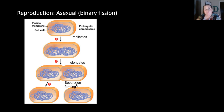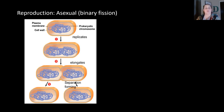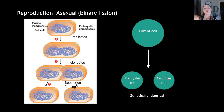Prokaryotic cells reproduce normally asexually. Because they are a single-celled organism, one cell divides into two through what we call binary fission. The reason it doesn't do this through mitosis is because it lacks a nucleus. Mitosis is cell division due to having a nucleus. Binary tells you it's going to be two, and fission means it breaks apart. So one parent cell turns into two cells, and these cells are all genetically identical.